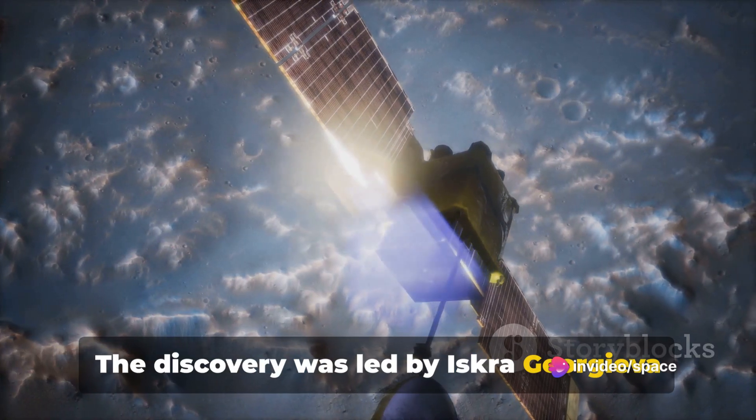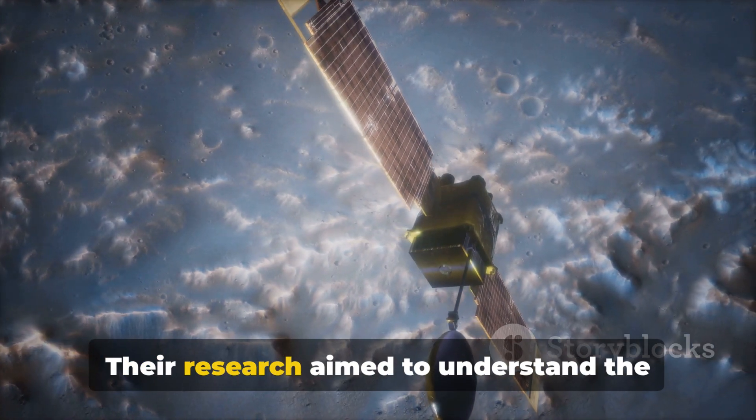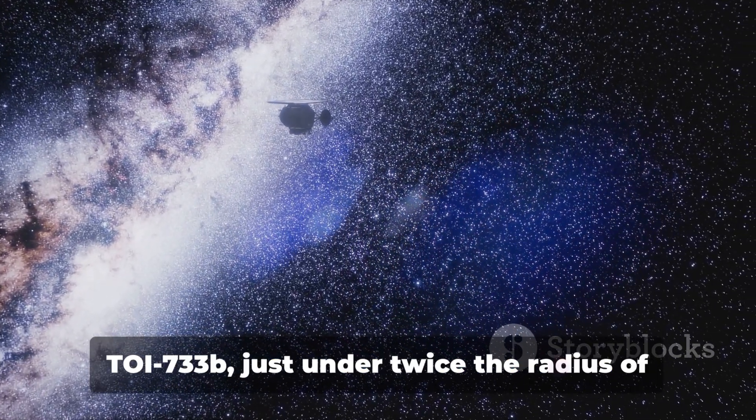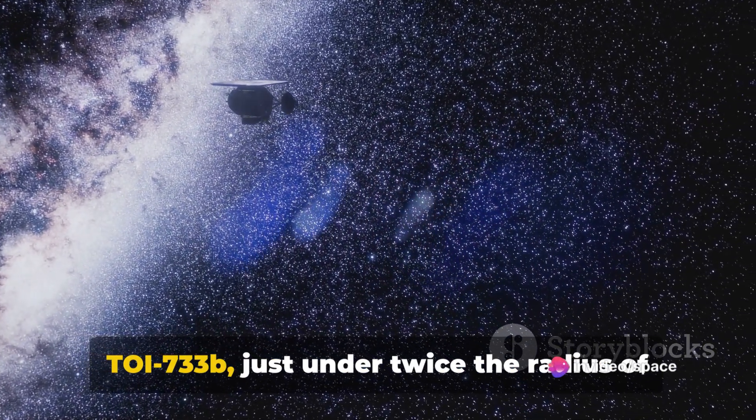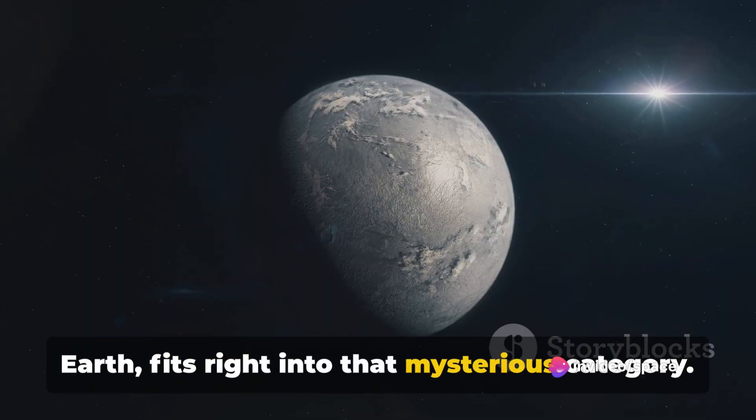The discovery was led by Iskra Georgieva and her team at the Chalmers University of Technology. Their research aimed to understand the puzzling gap in exoplanet sizes, and TOI-733b, just under twice the radius of Earth, fits right into that mysterious category.